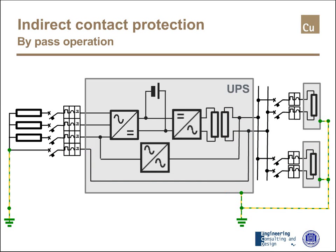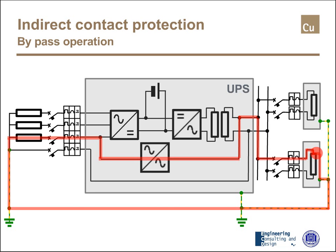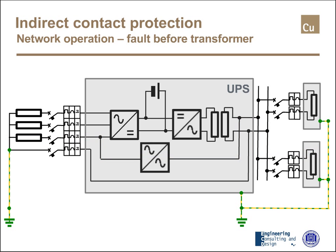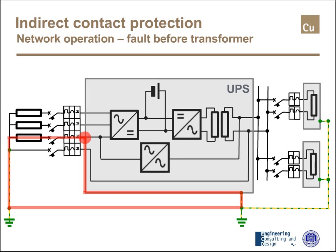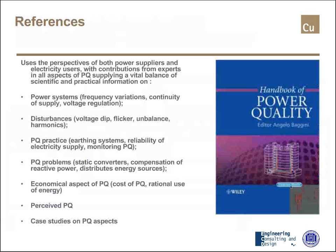If the load is fed by the bypass, the current is slightly different, but again this fault current allows the trip of the RCD protection, so the system is still protected. The same applies if the fault is before the transformer — the fault current is different but still sufficient to trigger the trip of the protection. That's all.